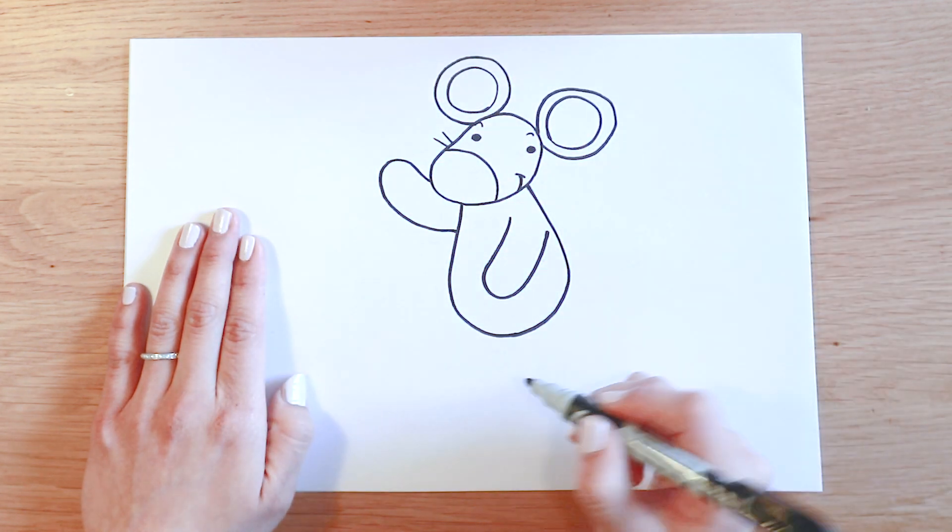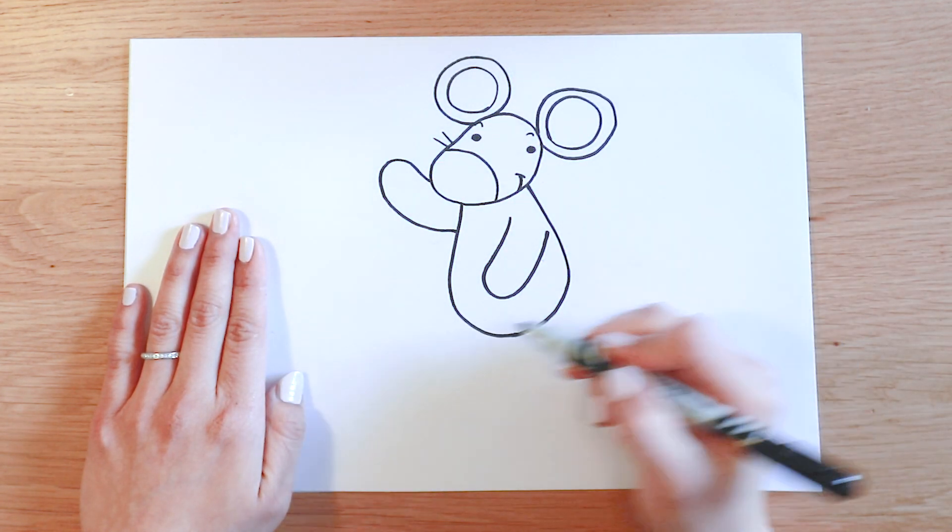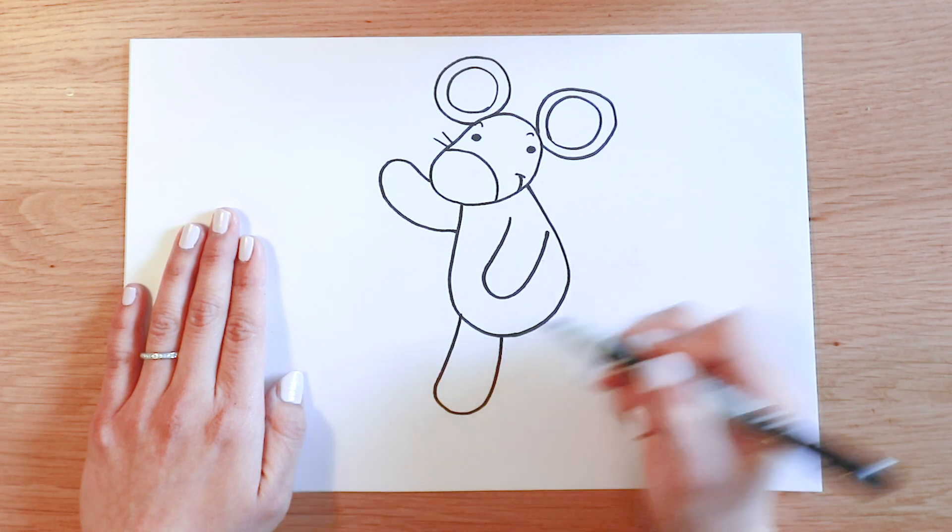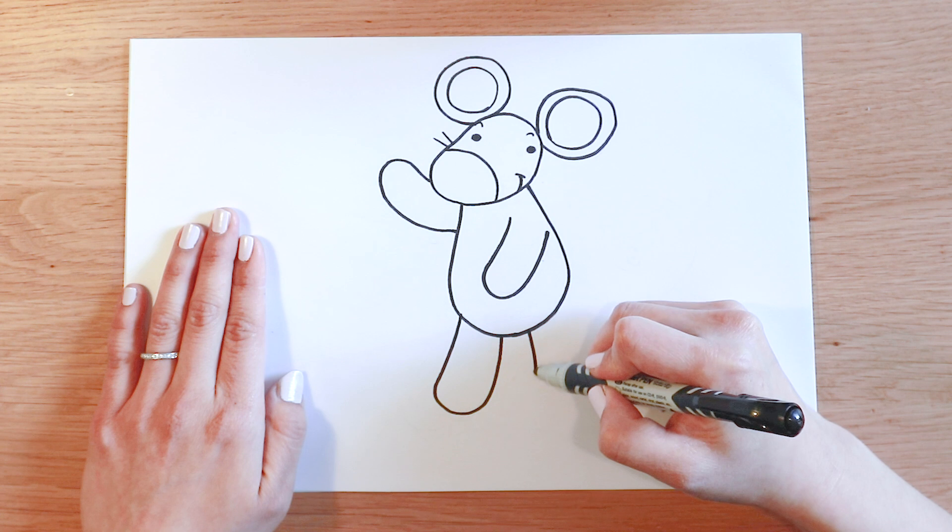He's waving at me. Let's draw his legs. A long U-shape on the left and another one on the right.